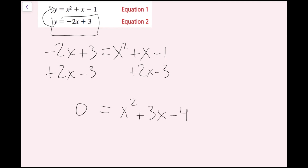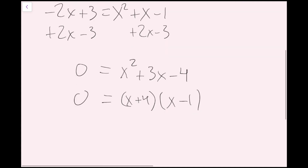We can solve this in various ways — complete the square, use the quadratic formula — but this looks easily factorable. My two numbers need to add up to 3 and multiply to negative 4, which is positive 4 and negative 1. So I have 0 equals x plus 4 times x minus 1.